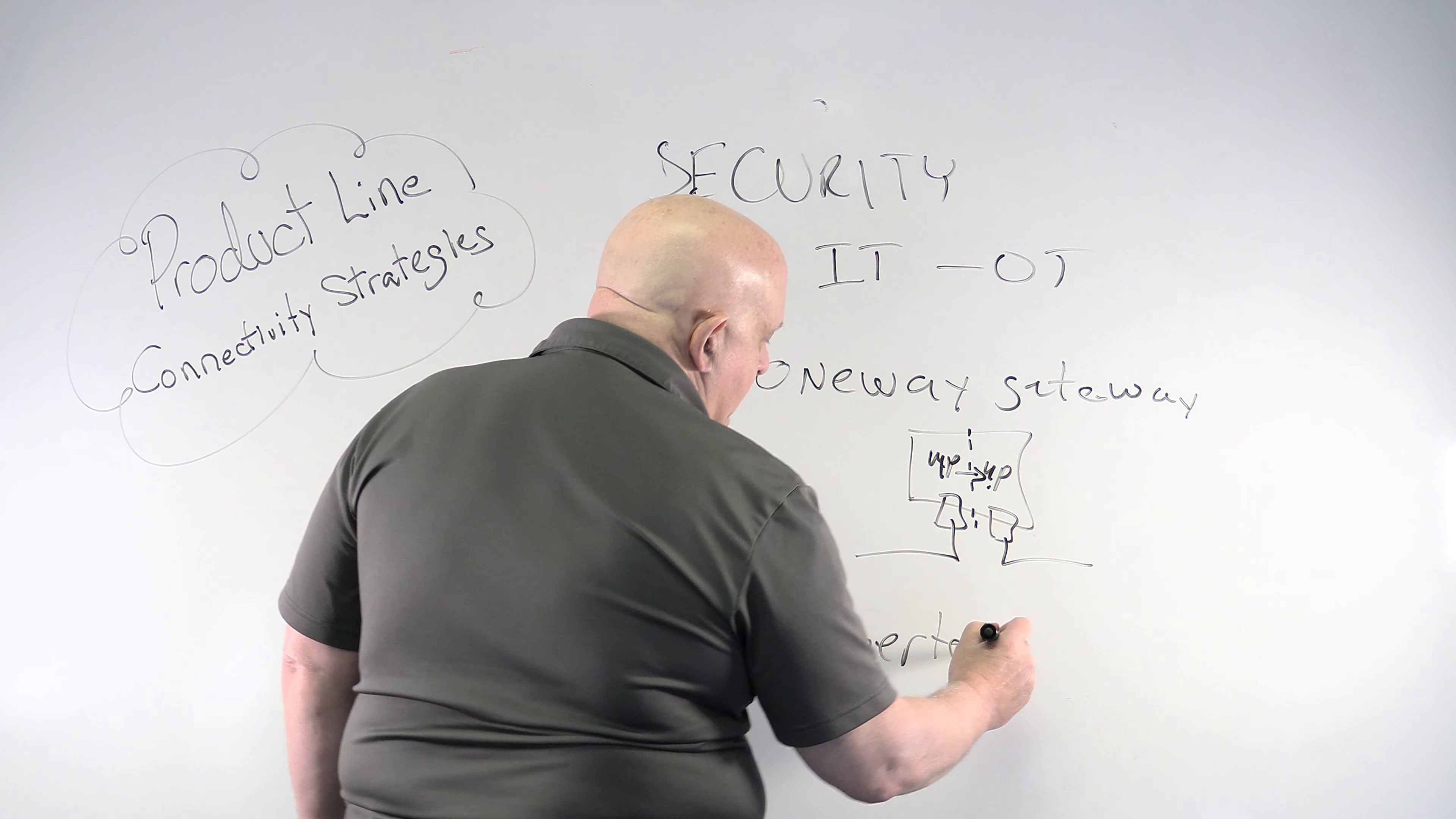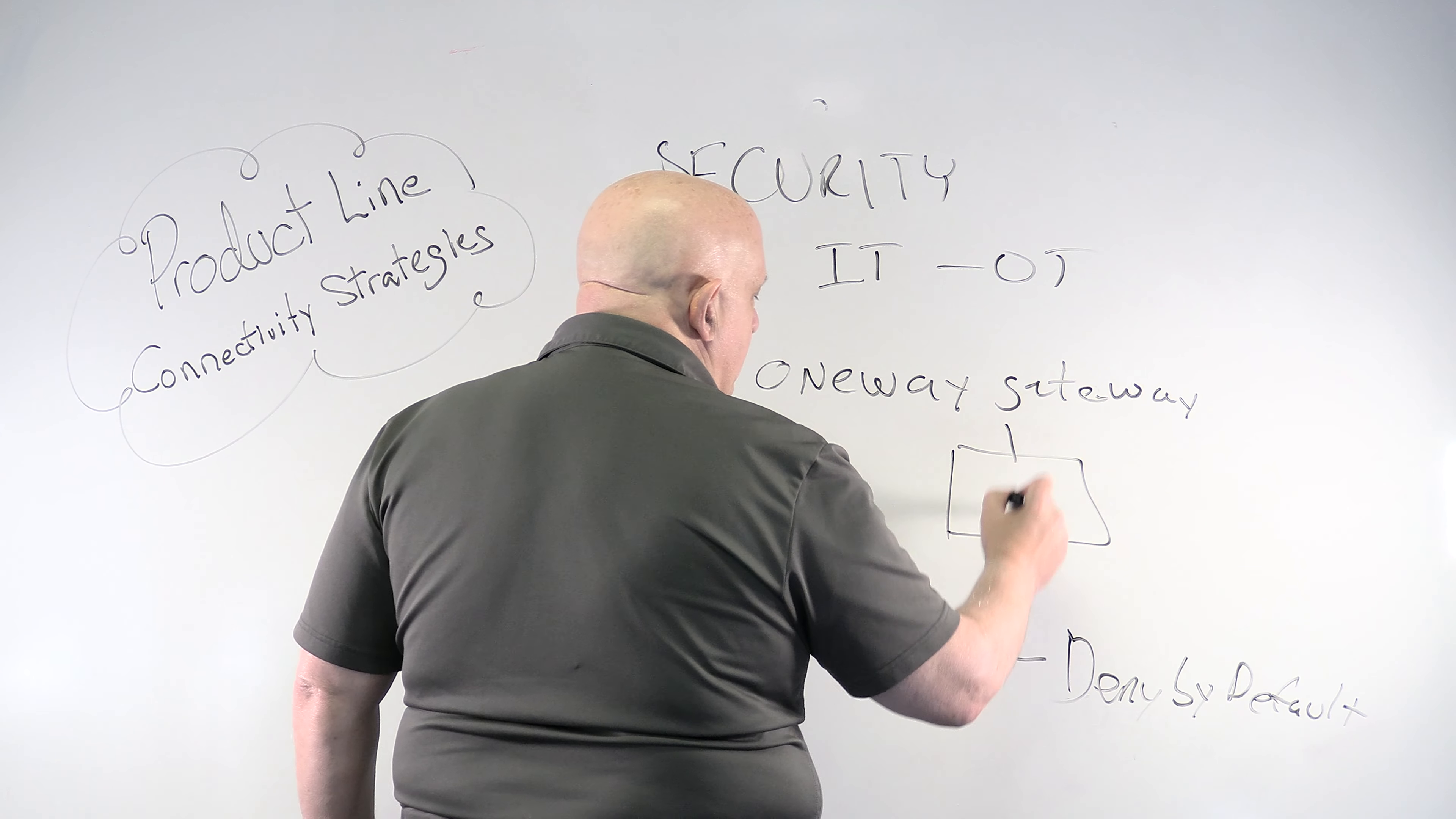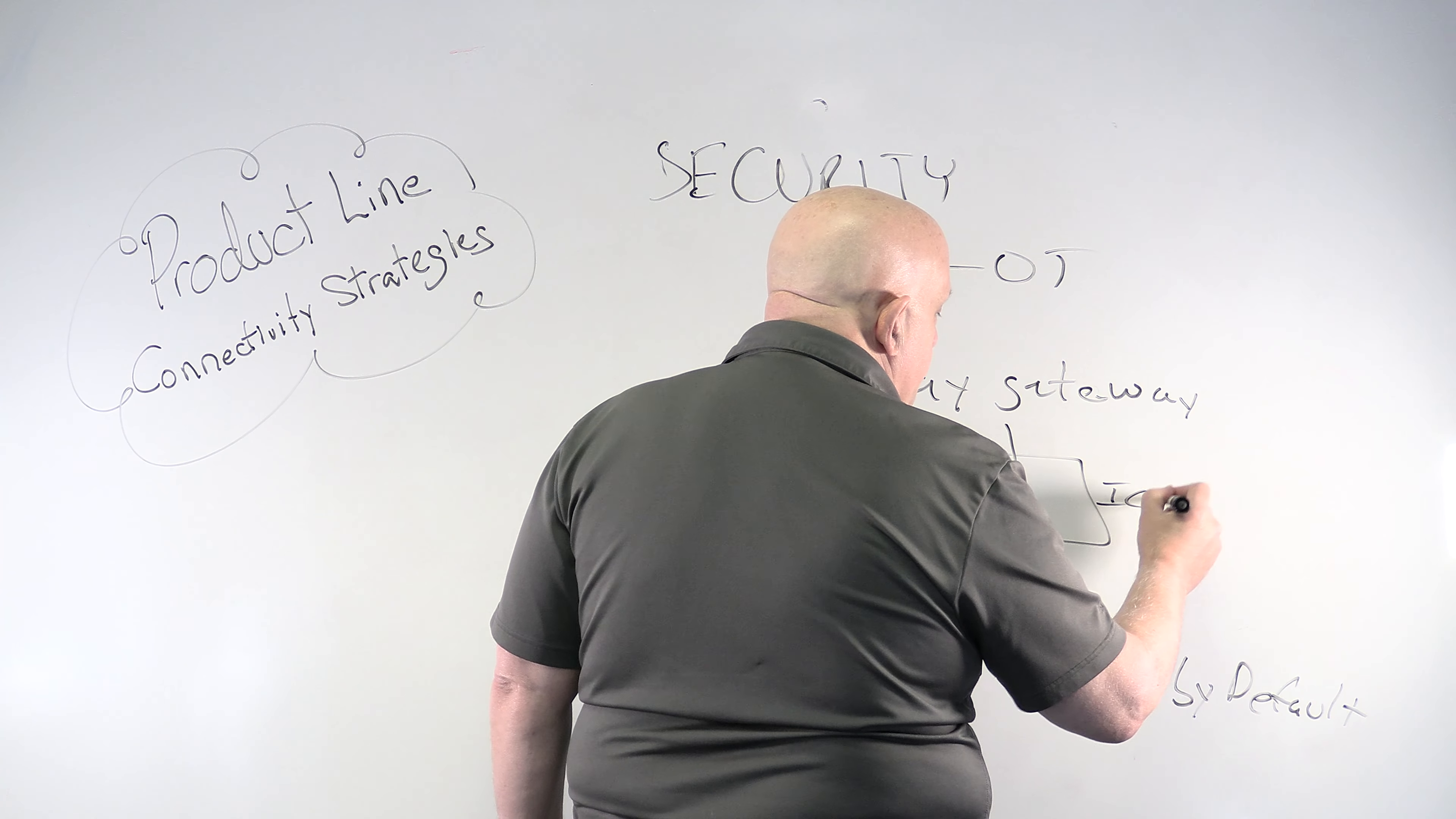Another one is a perimeter security device. And the one that I really like uses deny by default. Perimeter security, deny by default. So deny by default means that all the stuff that comes through that perimeter security device, that perimeter security device, everything that comes through has to be accepted. It has to be accepted by, essentially whitelisted by somebody in order to make it, in order to go through. And so everything else is denied.